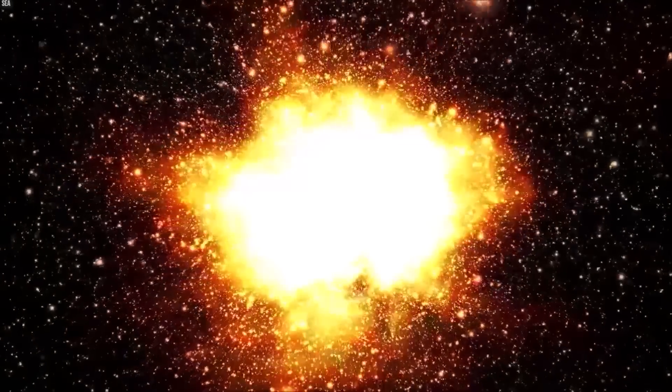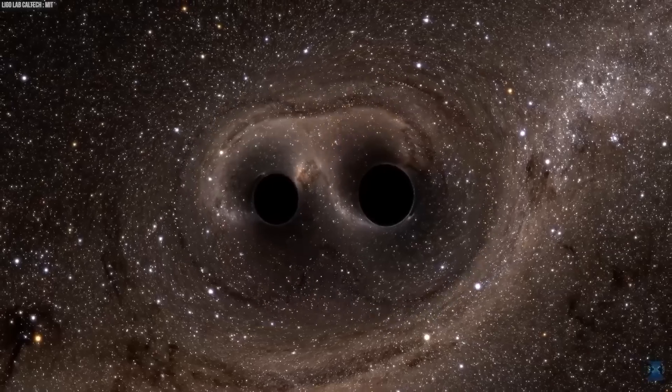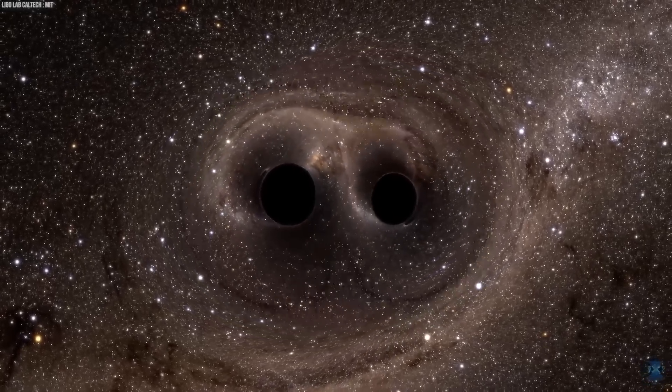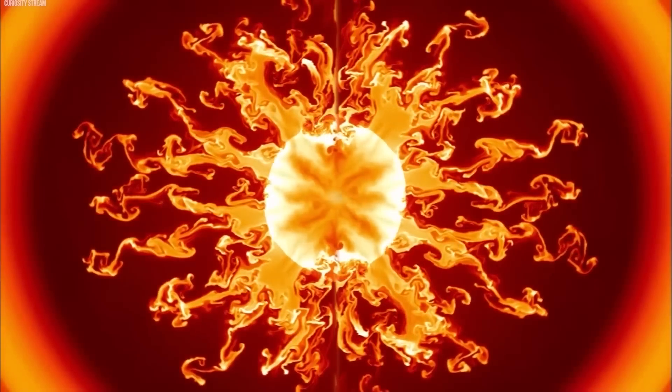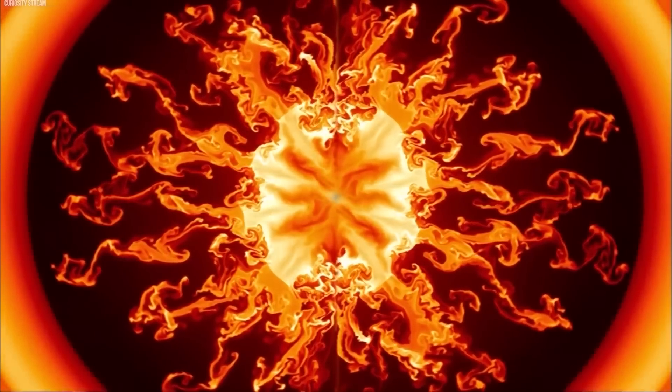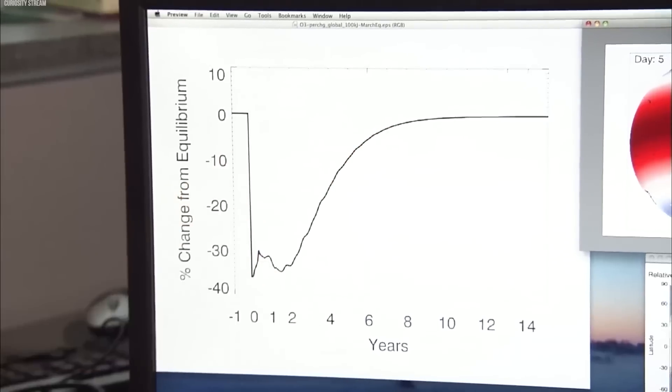Before the eruption, Betelgeuse had a pattern of becoming dimmer and brighter in a 400-day cycle. But that pattern disappeared temporarily. The materials from Betelgeuse's surface that moved to its outer atmosphere traveled at speeds of 200,000 miles per hour in just three months. Betelgeuse lost about twice as much material from its southern hemisphere into space compared to its usual amount.